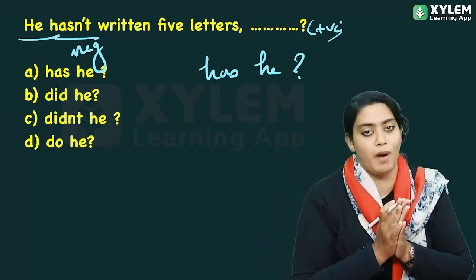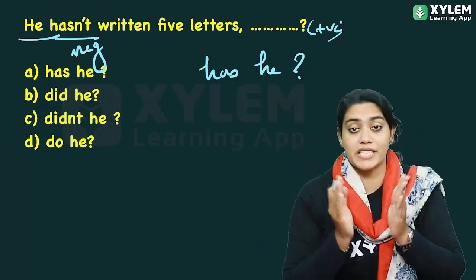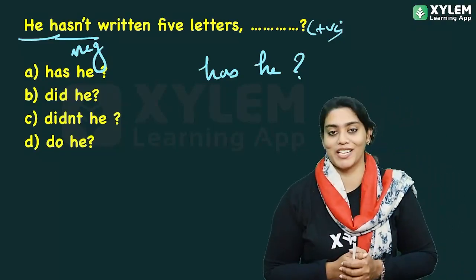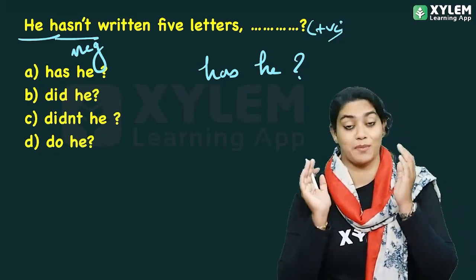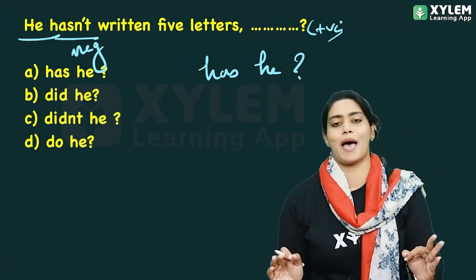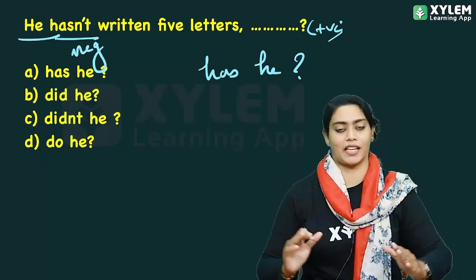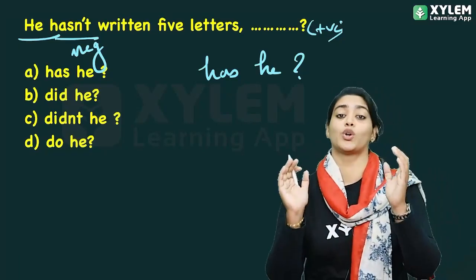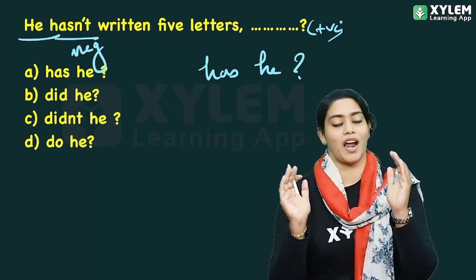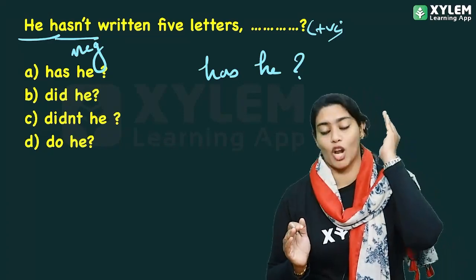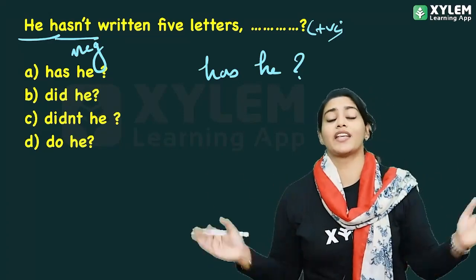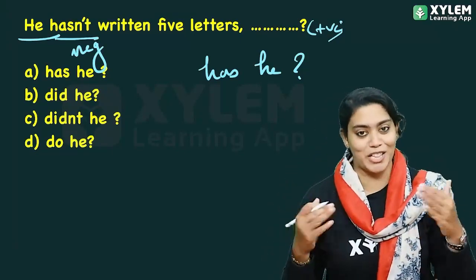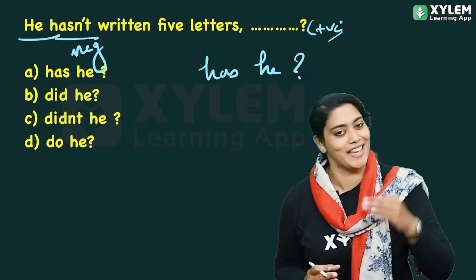To summarize: if you try to figure out any tense and any auxiliary verb, and determine whether the sentence is positive or negative, you can tag easily. If you remember these three rules — positive or negative, auxiliary verb, and tense — you can answer three or four question tag questions and easily get that score. So, let's do this — tag!